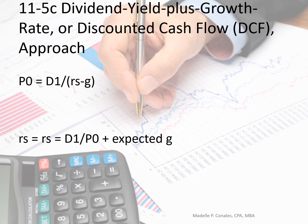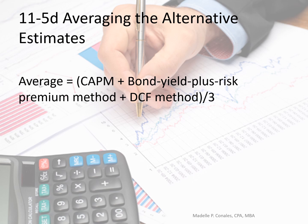Another model is the DCF or discounted cash flow approach — the dividend yield plus growth rate approach. We have the expected dividend divided by the price plus the expected growth rate, or the expected dividend divided by the return on equity minus growth to compute the price. A fourth approach is averaging the alternative estimates: average the CAPM result, the bond yield plus risk premium result, and the DCF result, then divide by three to get the cost of equity.